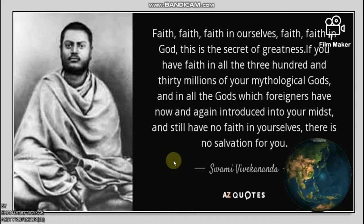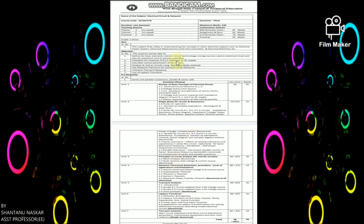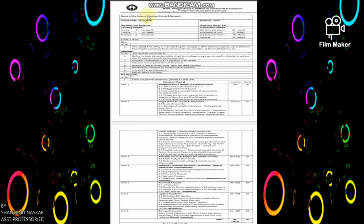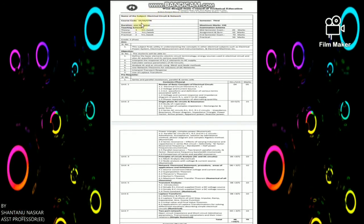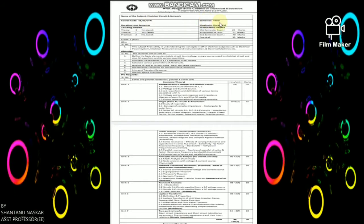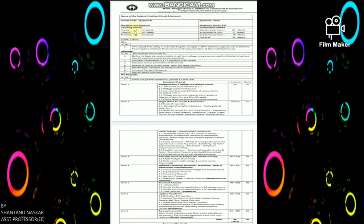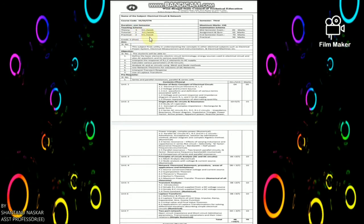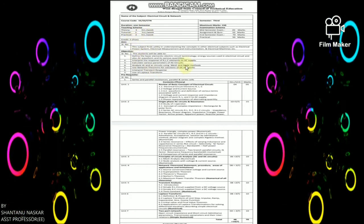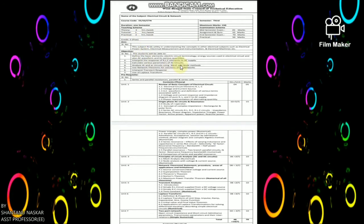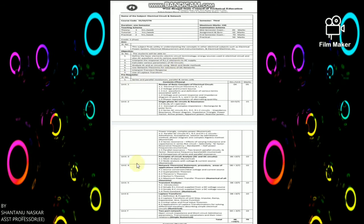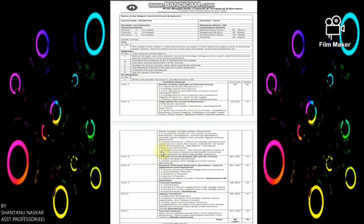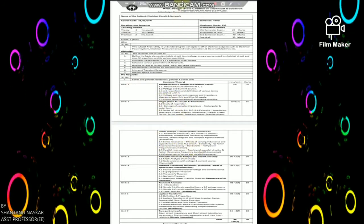Now let us discuss your syllabus. The subject is Electric Circuit and Network, course code SS3CTN, semester third — three hours theory lecture per week, one hour tutorials, two hours practical. There are seven units; I have already covered units one and two. Today I will discuss the last topic: parallel resonance.